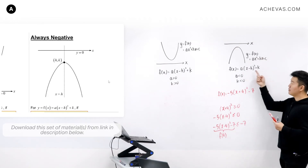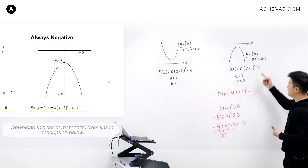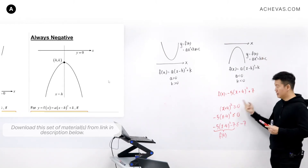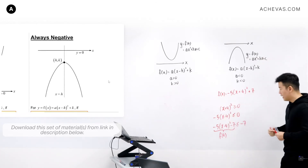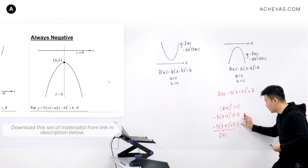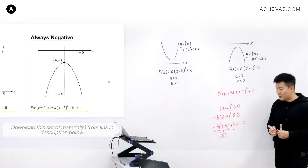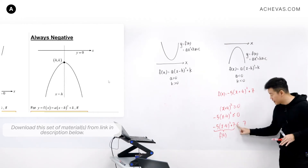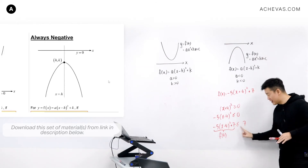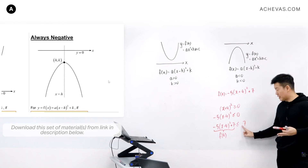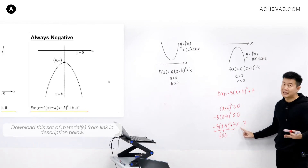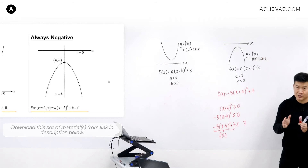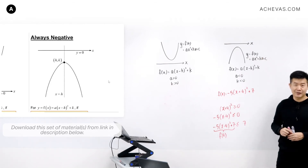Similarly, if any one of these conditions is not met — for example, if k is a positive number like positive 7 — then even though the inequality gives the expression less than or equal to 7, fx can be 7 (positive), 6 (positive), minus 1 (negative), or 0. Suddenly it can be sometimes positive, sometimes zero, sometimes negative — it is not an always negative scenario.